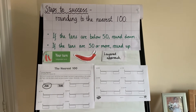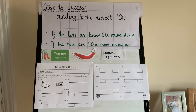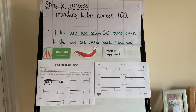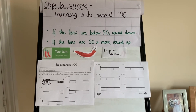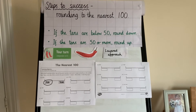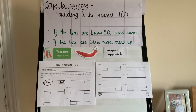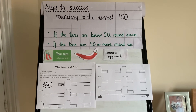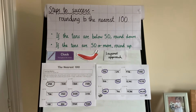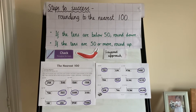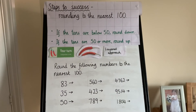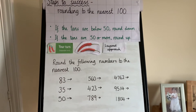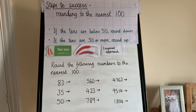Now it's your turn to have a go in your books — you can either write them down or print them out. Have a look at the first one: 234. You need to write the hundreds it lies between, so 200 and 300. The tens are 3, so 34 is less than 50, so it rounds down — circle the 200. Pause the video, have a go, then come back to check. Now have a go at chilli 2 — use the steps to success and round the following numbers to the nearest 100. Pause the video, have a go, then come back to check.